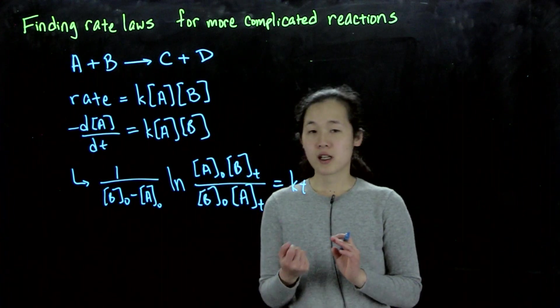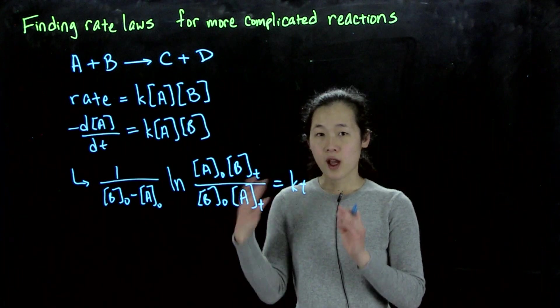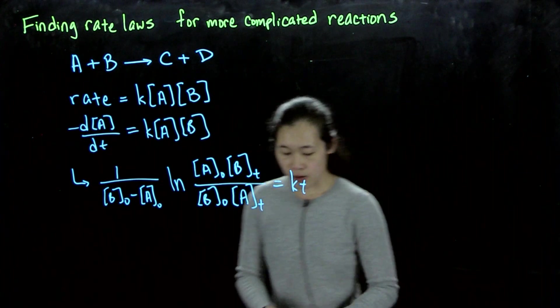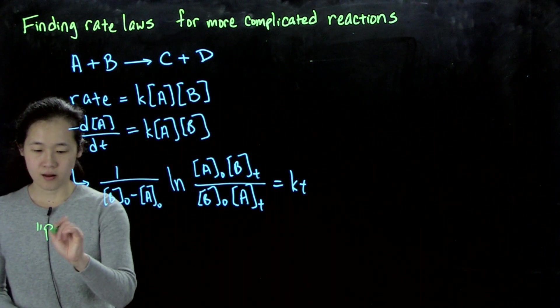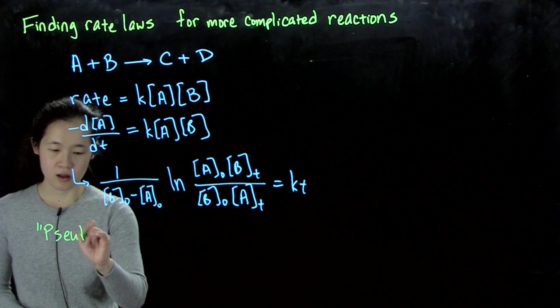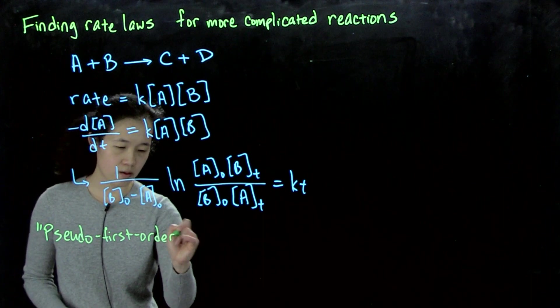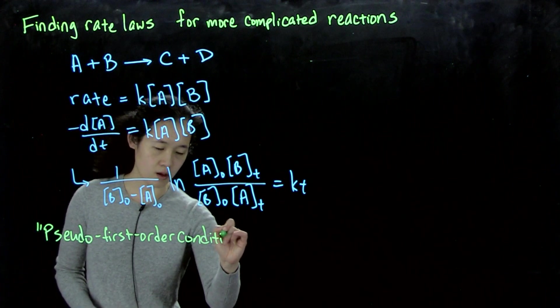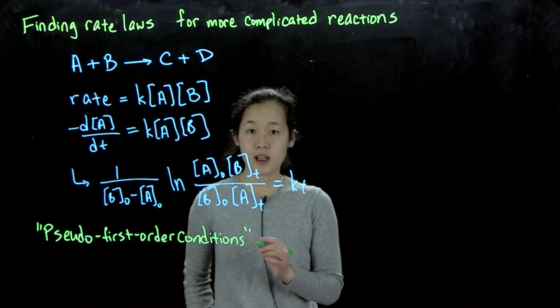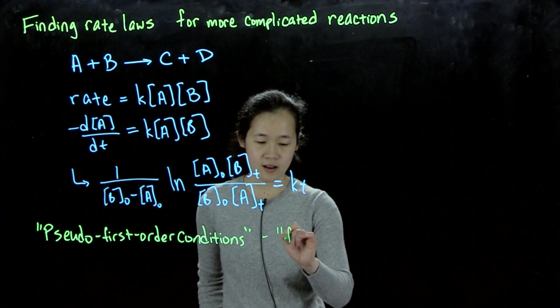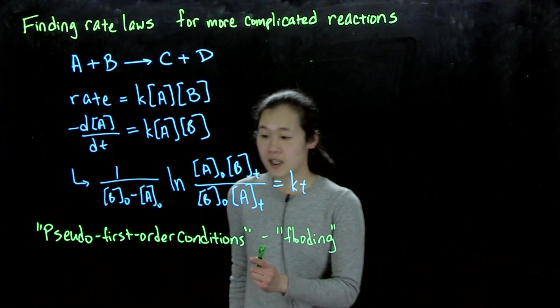So in practice, when you're running a kinetic experiment and you want to find the rate law, the way you typically do it is we will run the experiment under what's called pseudo-first-order conditions. This is also known in some older literature as flooding.